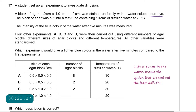Question 17: a student set up an experiment to investigate diffusion. A block of agar was stained uniformly with a water-soluble blue dye and placed into a test tube containing 10 cm³ of distilled water at 20°C. The intensity of the blue color of the water after 5 minutes was measured. Four other experiments used different numbers of blocks, different sizes, and different temperatures. Which experiment gives a lighter blue color in the water after 5 minutes compared to the first experiment?